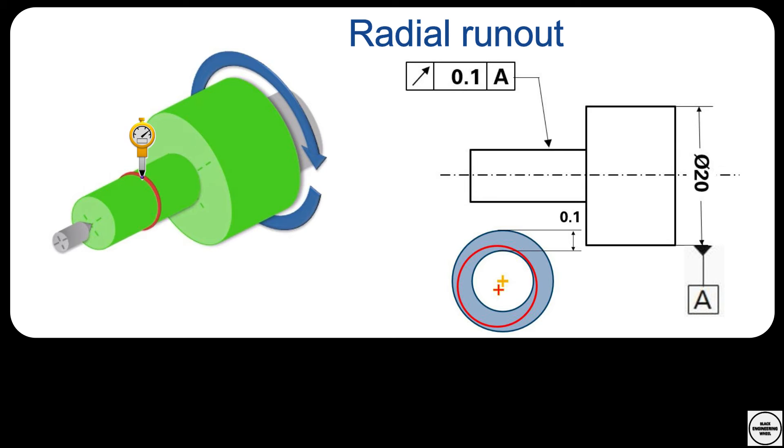Or it could be a result of a cylindricity or circularity error. Maybe it was not a circle, but it looked like that. I will still get different readings when I rotate the part around A.